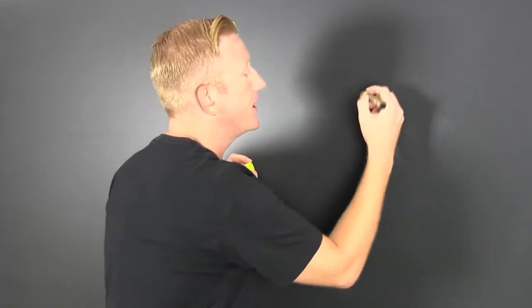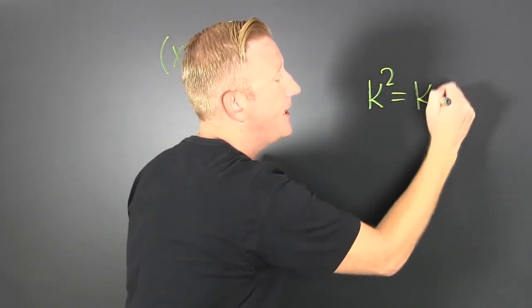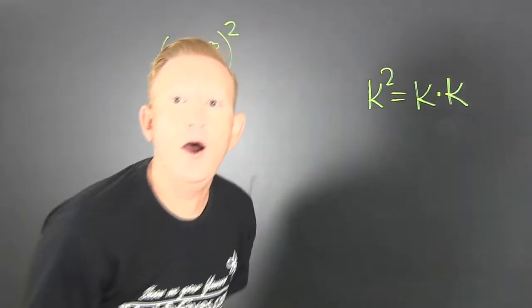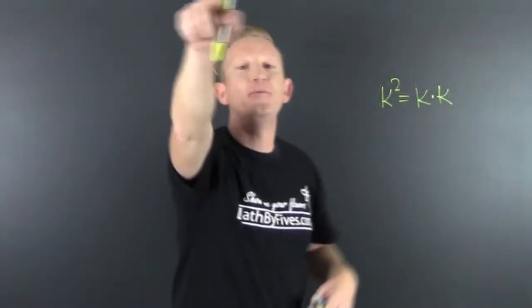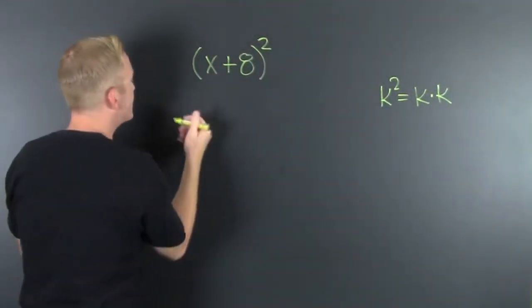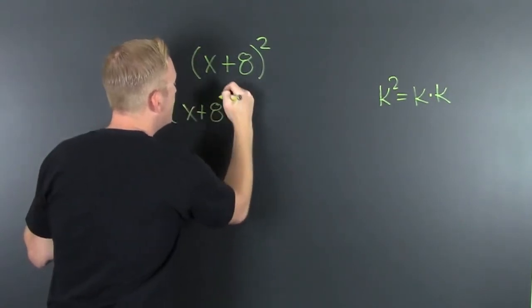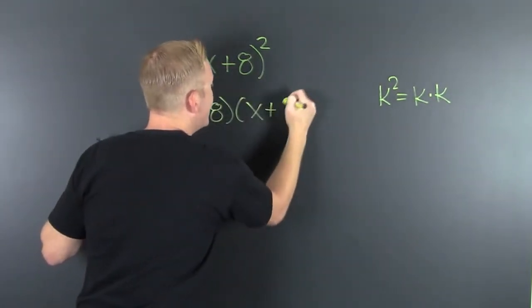if I had something like k squared, that's k times k. Okay! So, I can rewrite this as x plus 8 times x plus 8.